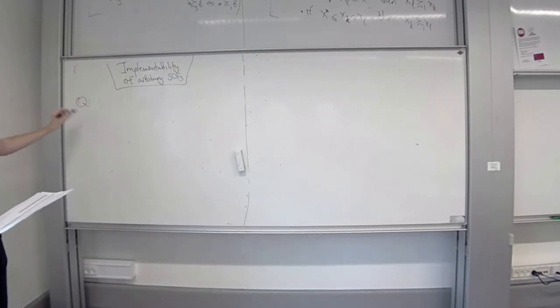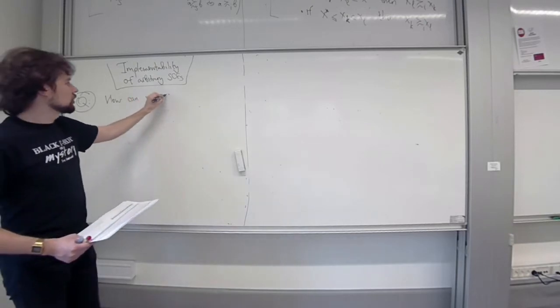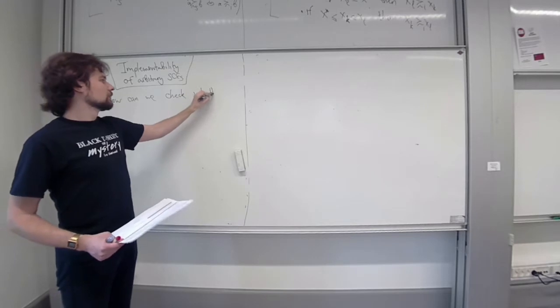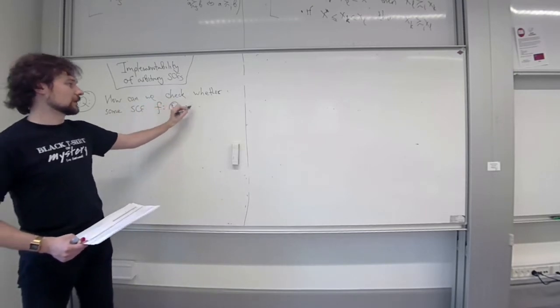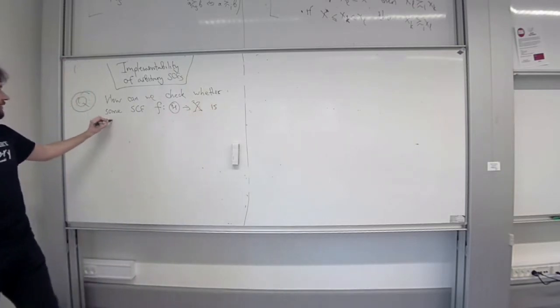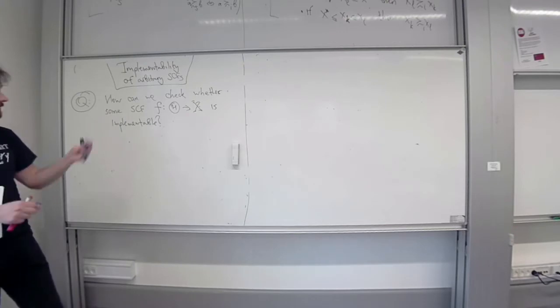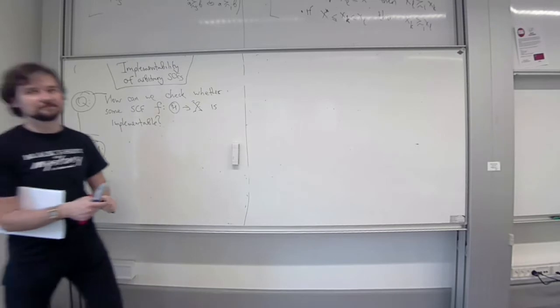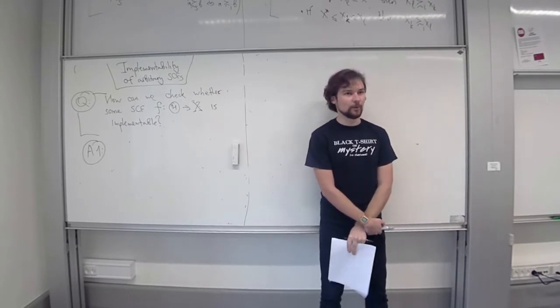The question is: how can we check quickly, or what is the criteria that we can use, to check whether a given social choice function - a CFF that maps type profiles into outcomes - is implementable? What is the quick recipe we have, the shortcut?